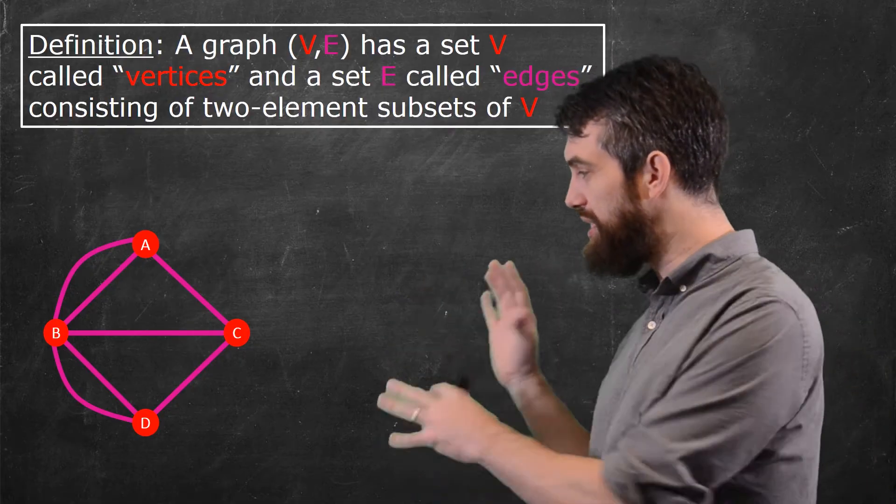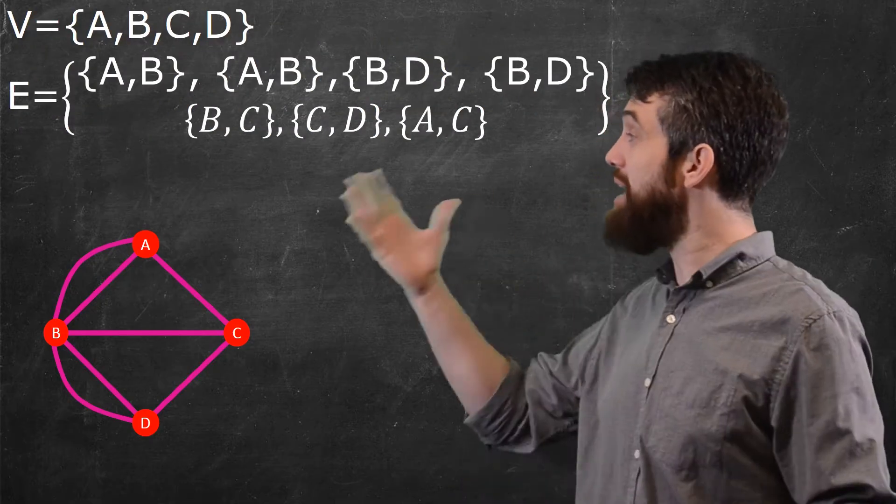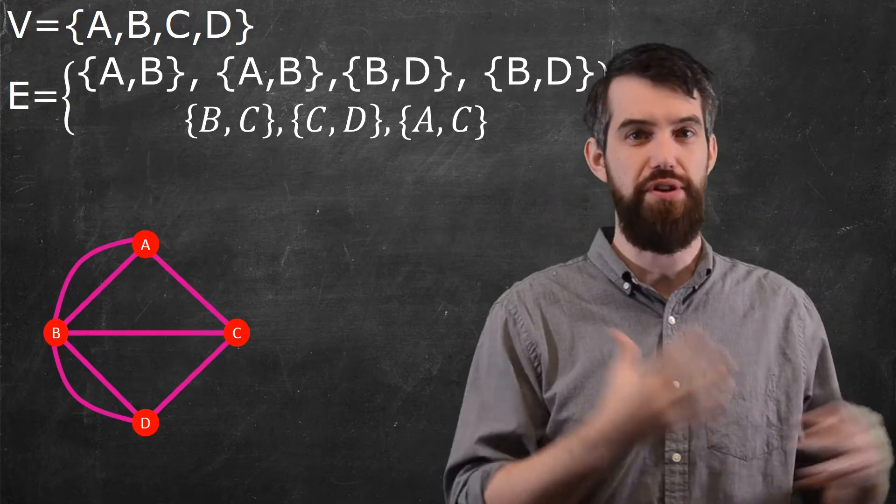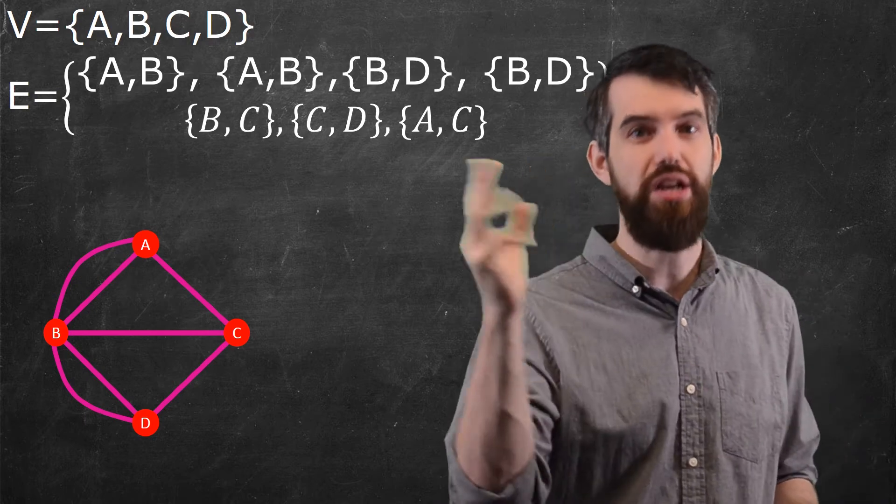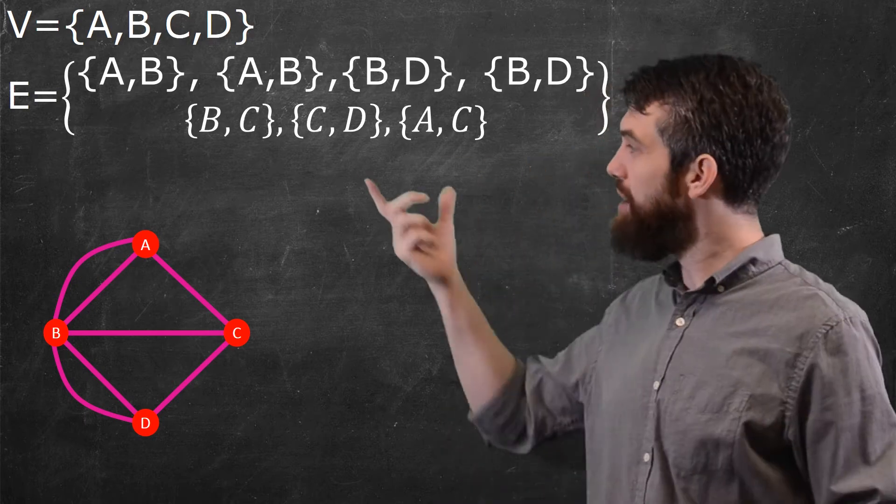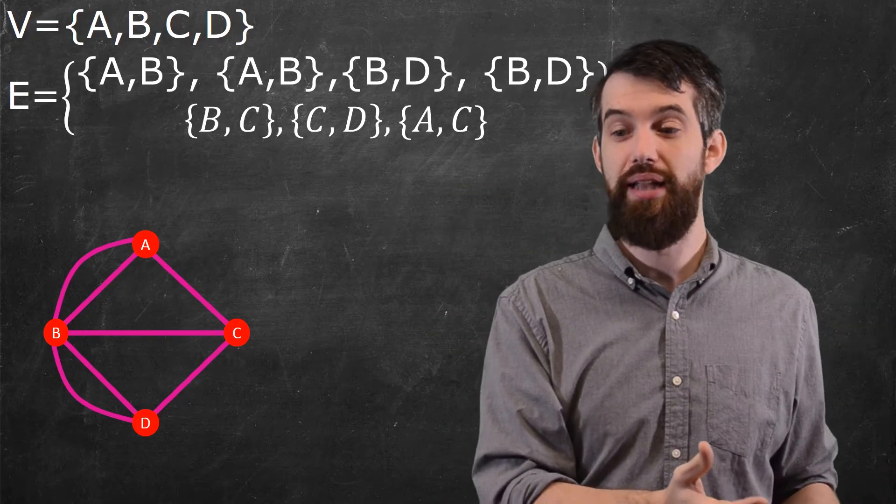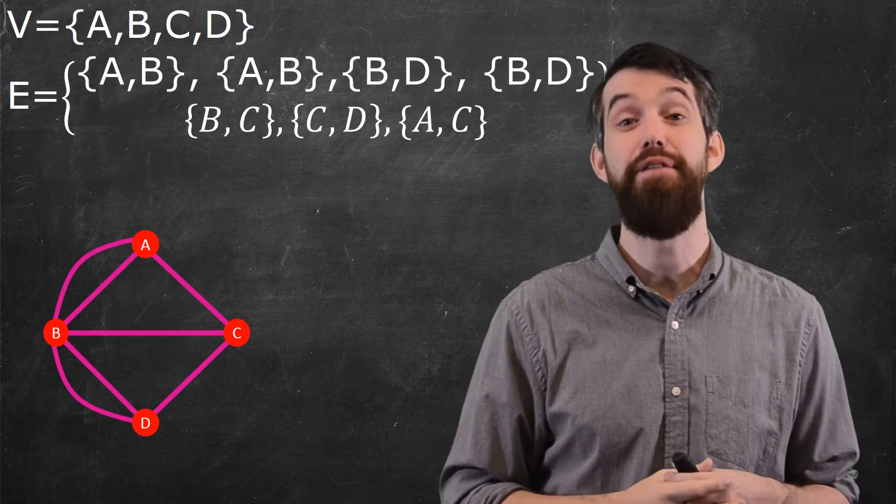So in this specific one that I have here, let's codify it exactly. My vertices, my A, B, C, D, those are what I will call my vertices. And then my edges are all the different connections. So I see in the graph that there are two different ways I can go from A to B. So I write down the two element subset bracket A, B, I write that down twice. And likewise, there's sort of one connection from C to D, so I put one of those into my edge set.